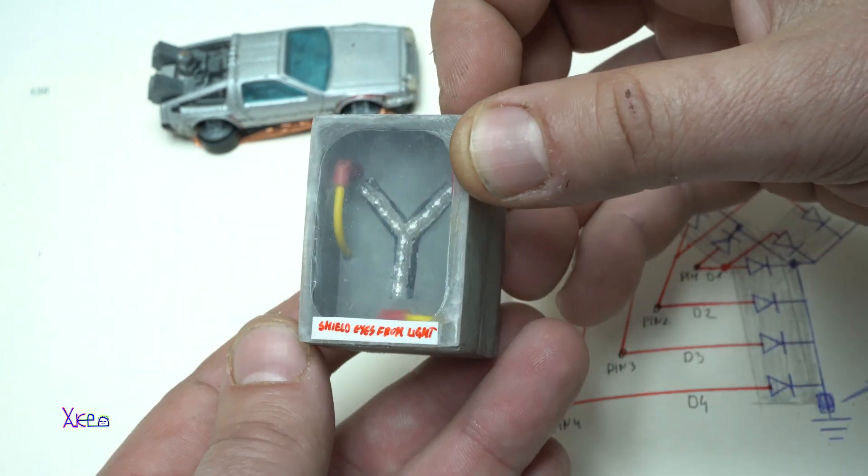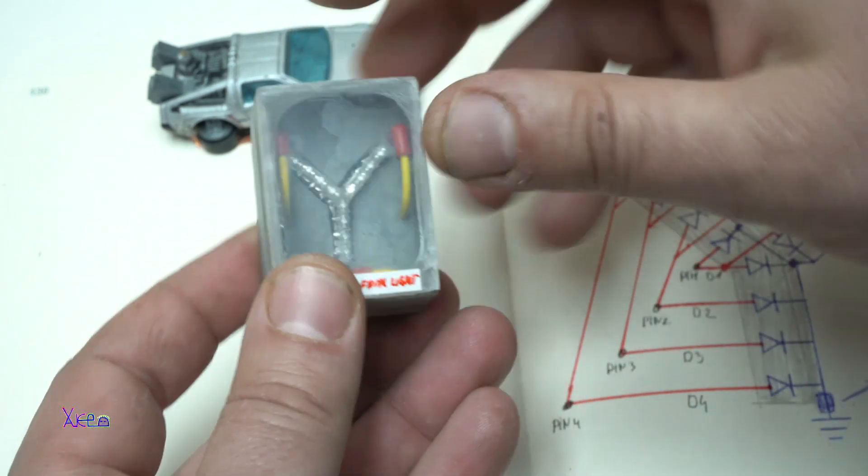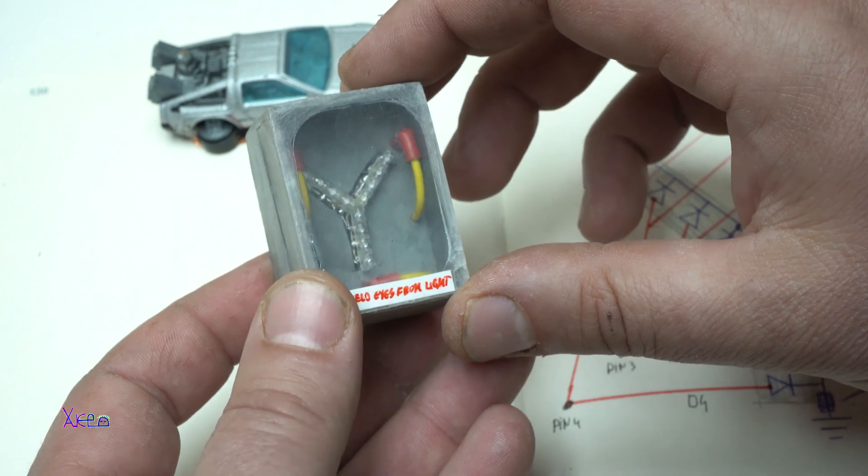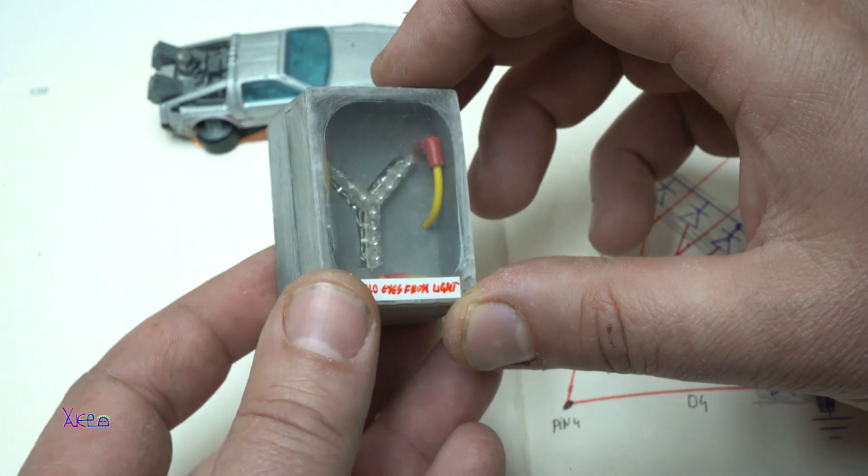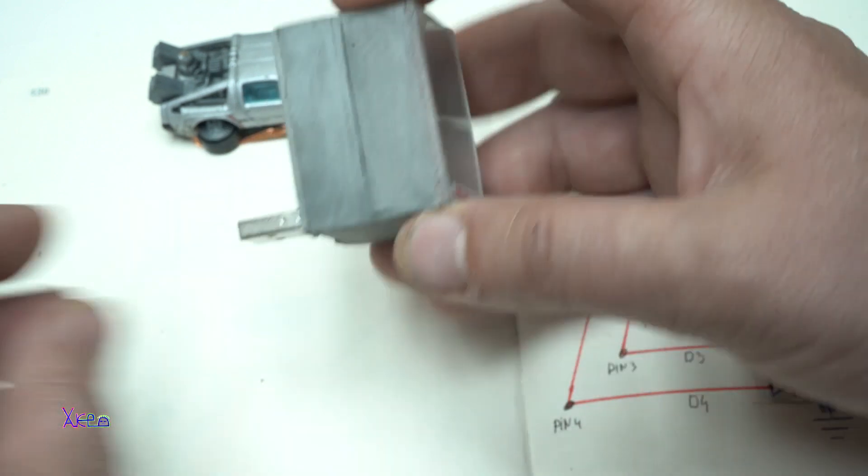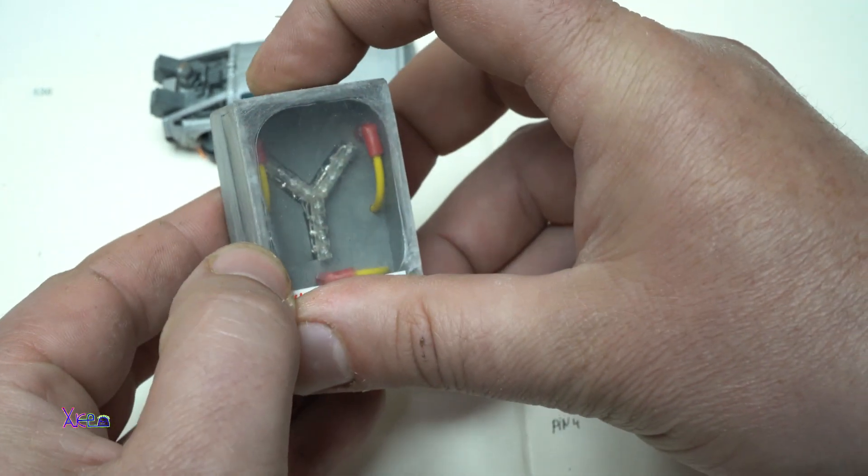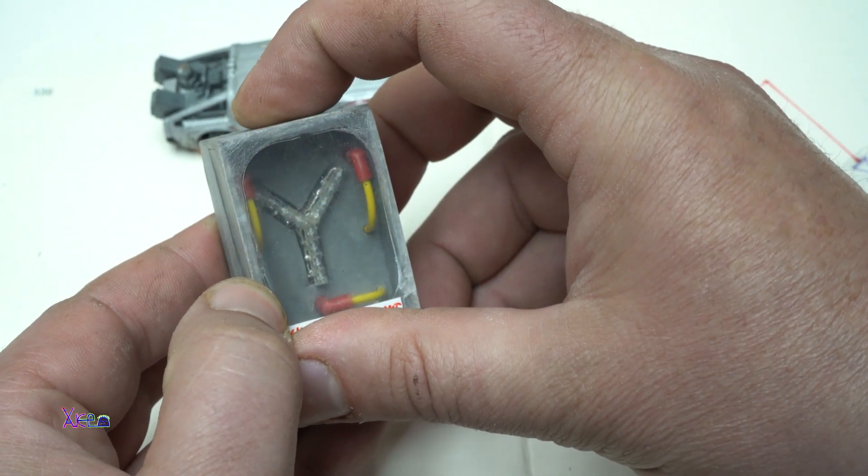Take a look at this gadget. USB LED flux capacitor from Back to the Future movie. And let's find out how to make it.